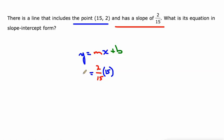for x and 2 in for y. And the only thing I don't know in this equation is the y-intercept. So I could solve this equation for b.